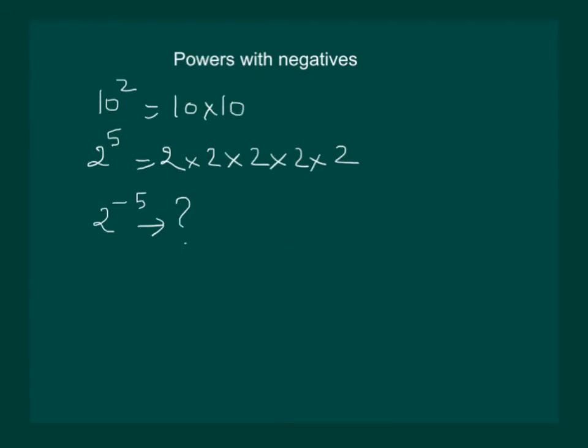Without going into derivation, we would like you to know that 2 to the power minus 5 is equal to 1 by 2 to the power 5.